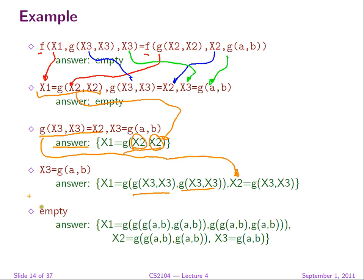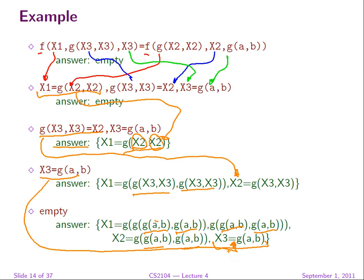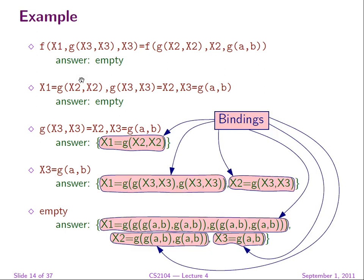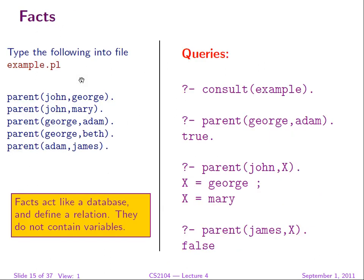Finally we have X3=g(a,b). We take this and add it to the answer. Every occurrence of X3 is replaced by g(a,b) — here, here, here, and so on throughout the existing bindings. So we add it and also replace X3 everywhere. All these things being added to the answer are bindings. Now let's move on to slightly more complicated stuff.